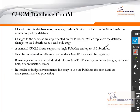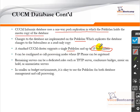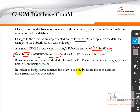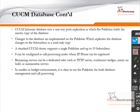The Informix database uses a one-way push from the Publisher to the Subscriber. The Publisher is the master database. Changes to the database are implemented on the Publisher only, and then replicated to the Subscribers, which hold a read-only copy. The standard Call Manager cluster supports a single Publisher and up to 19 Subscribers. Eight of those 20 total servers can be configured for call processing where IP phones can be registered. The remaining servers can be dedicated to roles such as TFTP server, conference bridge, music on hold, or announcements. In a smaller or budget environment it is acceptable to use the Publisher for both database management and call processing, but for a high-availability environment it is not recommended.